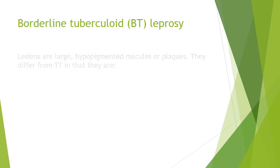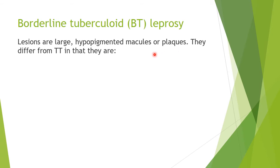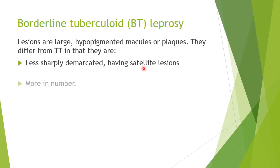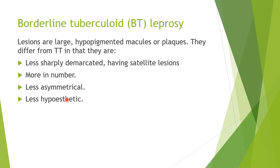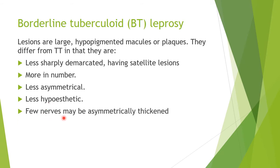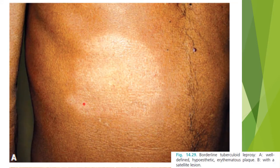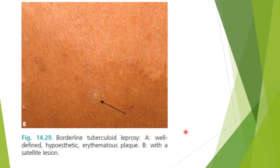Borderline tuberculoid leprosy presents with large hypopigmented macular plaques that differ from tuberculoid type in four ways: they are less sharply demarcated, have satellite lesions, are more numerous, are less asymmetrical, and are less hypoesthetic. A few nerve knobs may also be asymmetrically thickened. The image shows a well-defined hypoesthetic erythematous plaque with a small satellite lesion.